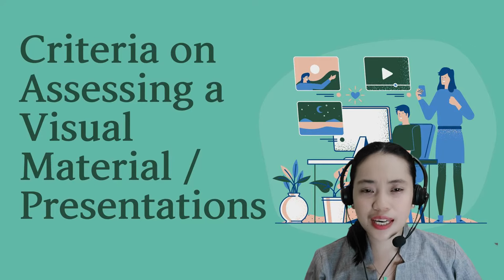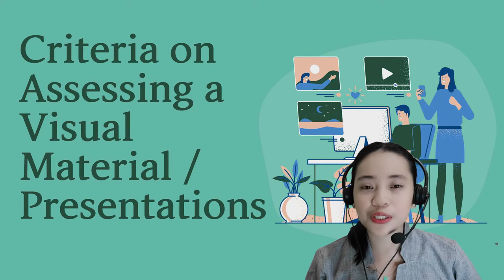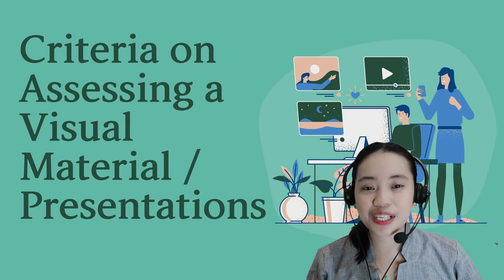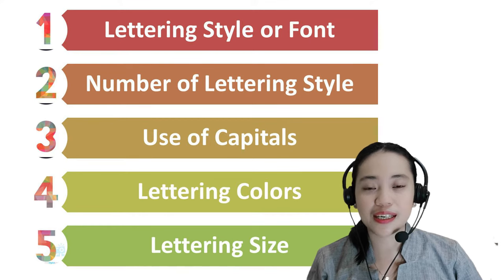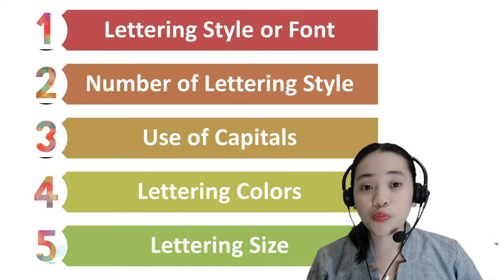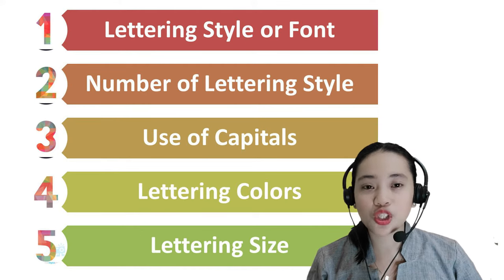Now, the question is how are we going to assess the visual material or presentations? We have criteria for that. First, lettering style or font — it means consistency and harmony. Second, number of lettering styles: no more than two in static display, for example in charts and bulletin boards.